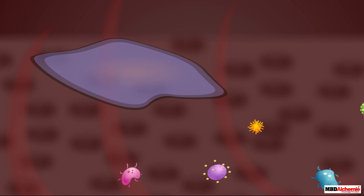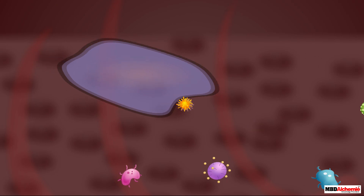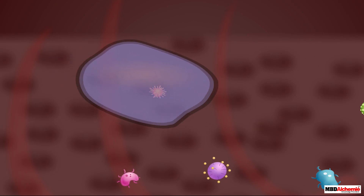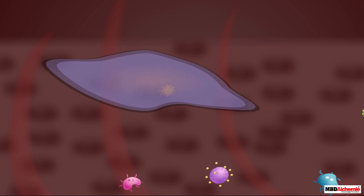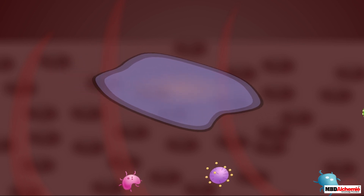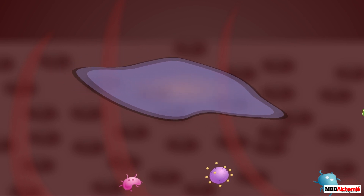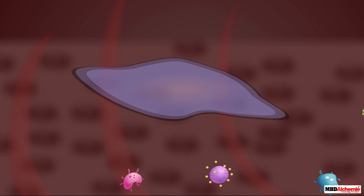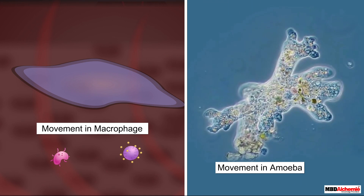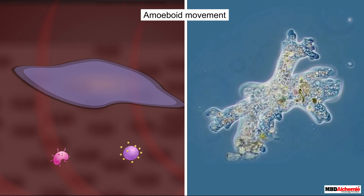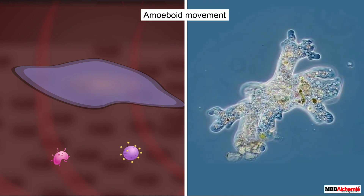These pseudopodia attach to the targeted foreign substance and engulf it. The cytoplasm then flows into the pseudopodia, leading to the movement of the cell forward. This type of movement is similar to the movement seen in an amoeba. Thus, it is known as the amoeboid movement.